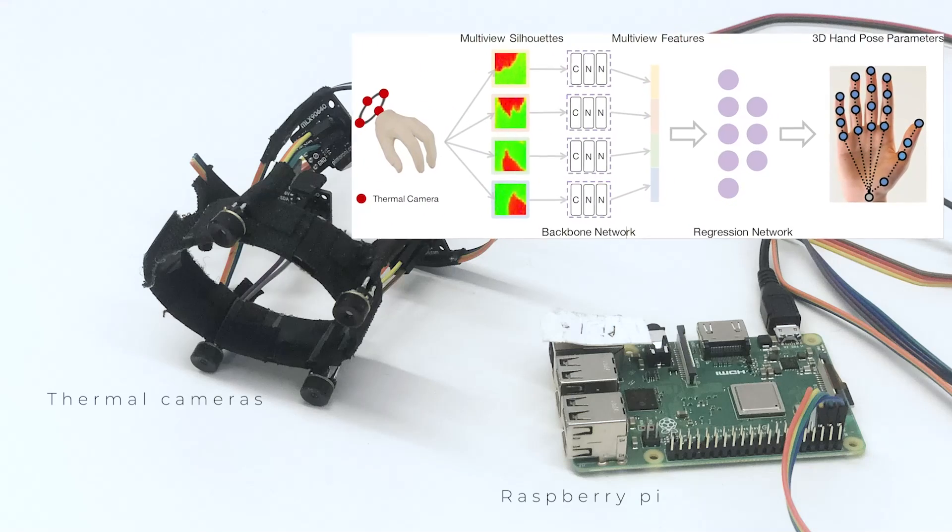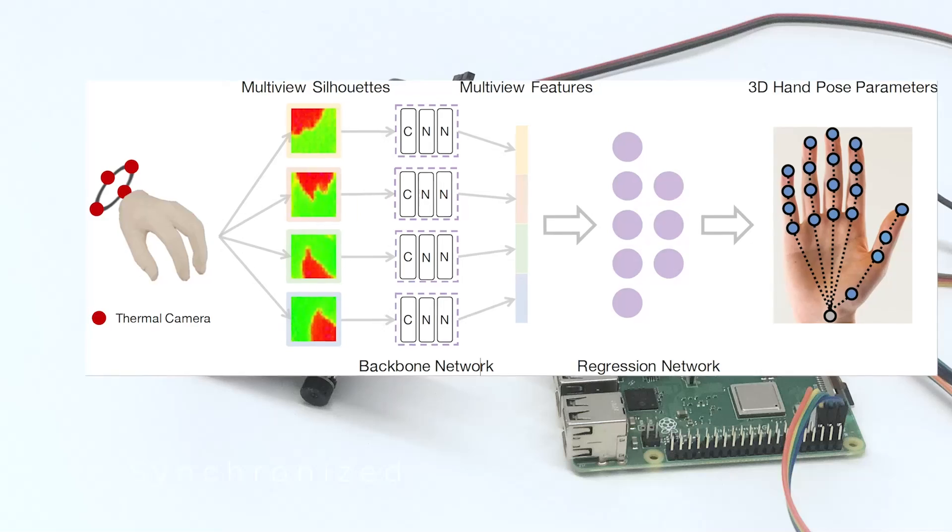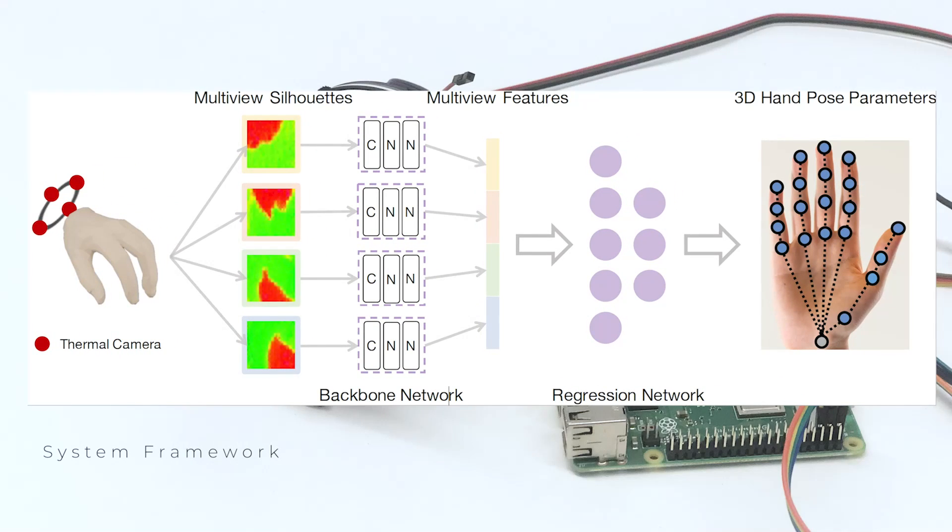This is the wristband in the FingerTrack system. The input comes from four synchronized thermal cameras, and all cameras transmit data to Raspberry Pi. Then, Raspberry Pi connects to a computer, which runs a deep learning model to predict all joint positions. The neural network model leverages ResNet34 as the backbone and a fully connected layer as the decoder.